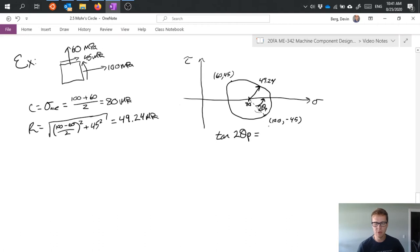And this is going to be equal to 2 tau xy over sigma x minus sigma y. So really what I've done here is drawn a triangle that calculates or figures out the angle of all of this based on what my stresses are.